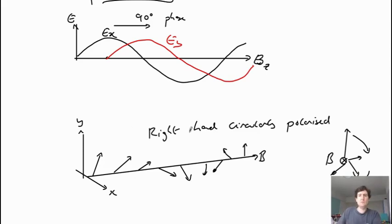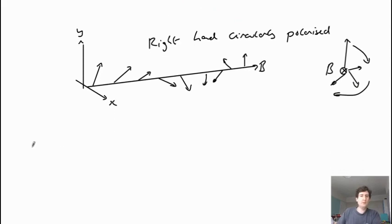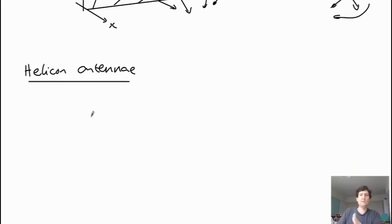So there are several ways that these can be driven. So a helicon using helicon antennas. So these essentially use the fact that these are rotating. The right and left are circularly polarized.